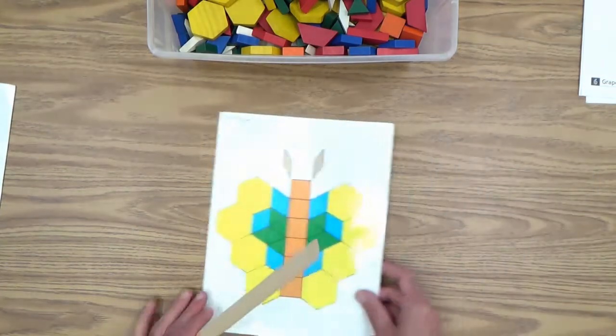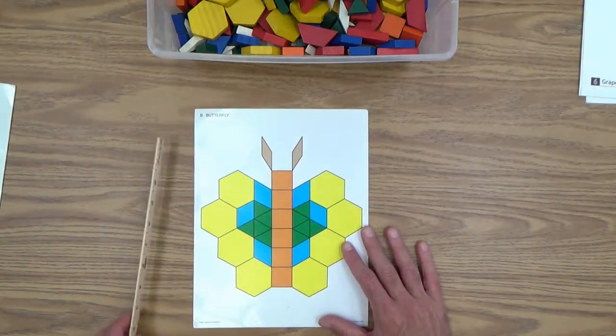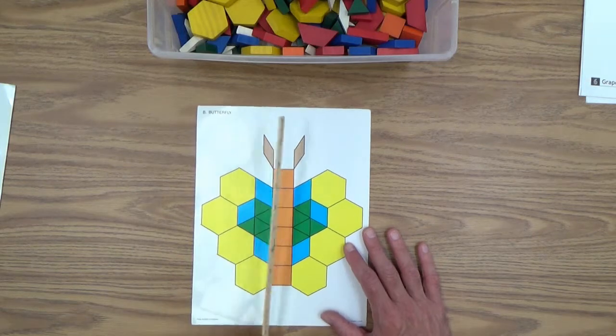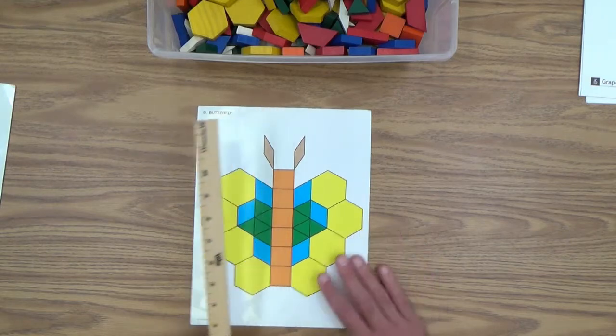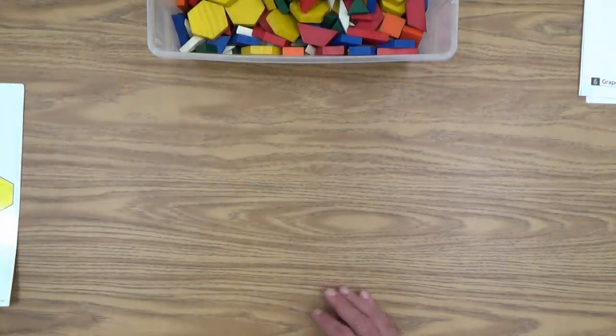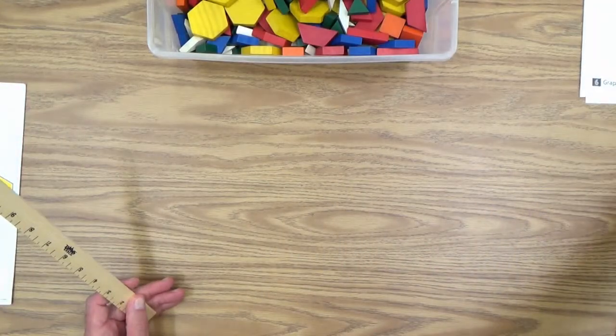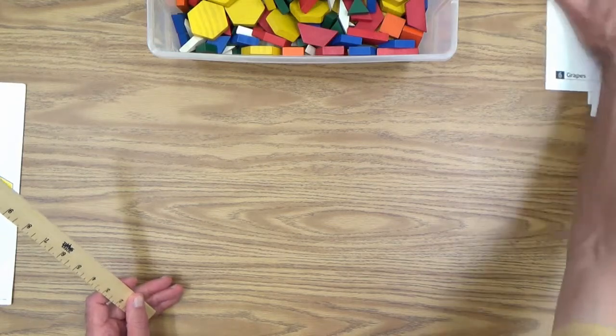Might as well do one more, the butterfly. Yes, that's obviously symmetrical. Put the ruler on and see that very obviously that's symmetrical. And of course, you want to mix some asymmetrical ones in there, too. And I'll show you those right now.